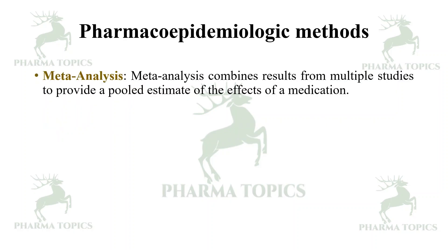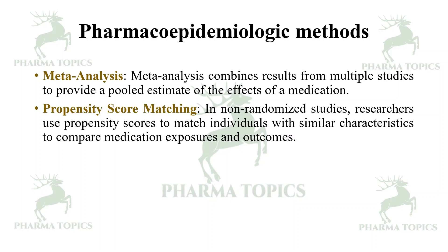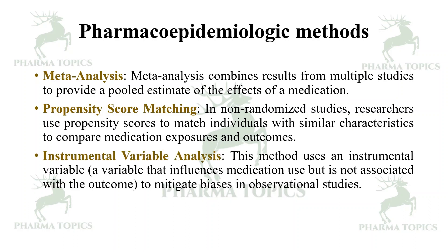Other methods include meta-analysis, which combines results from multiple studies to provide a pooled estimate of the effects of a medication. Propensity score matching is used in non-randomized studies where researchers match individuals with similar characteristics to compare medication exposures and outcomes. Instrumental variable analysis uses a variable that influences medication use but is not associated with the outcome, to mitigate biases in observational studies.